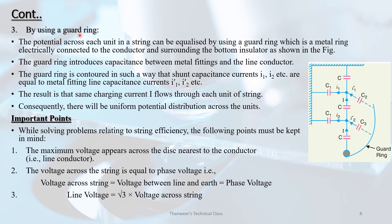By using guard rings: A guard ring is a metal ring electrically connected to the conductor and surrounding the bottom insulator. The guard ring is arranged such that the shunt capacitance currents i1 and i2 are equalized by the line capacitance currents from the guard ring, so that the same charging current flows through each disk unit.